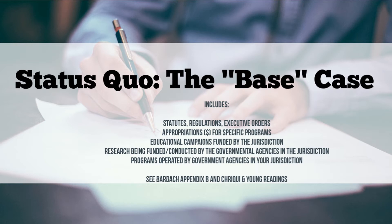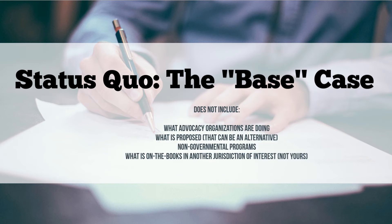As you can see from this slide, the status quo includes a range of options — it's not just legislation or regulations. It also includes things like appropriations or funding from the government for programs, programs specifically funded by the government, educational awareness campaigns operated by or funded by the government, and research being supported by the government. One key point: the status quo and your alternatives are not what advocacy organizations or private organizations may or may not be doing. The goal of this project is to understand what the government in your jurisdiction of interest has or has not done to address this problem.